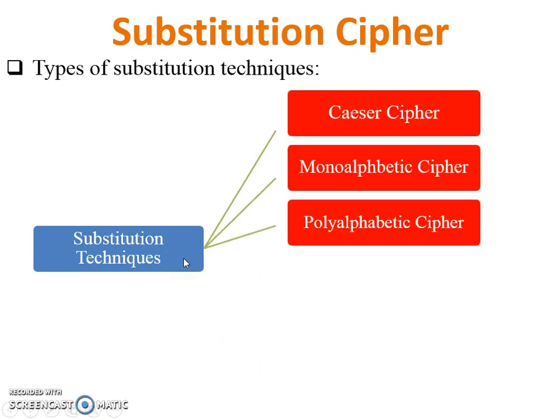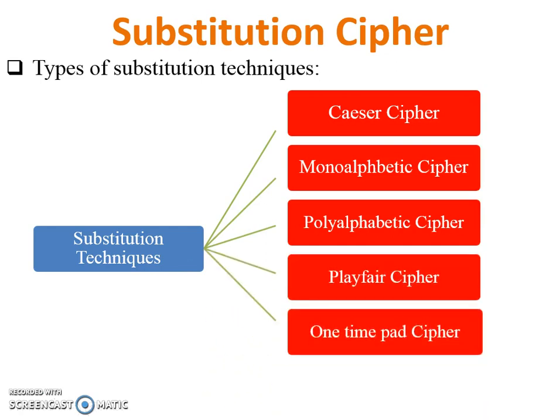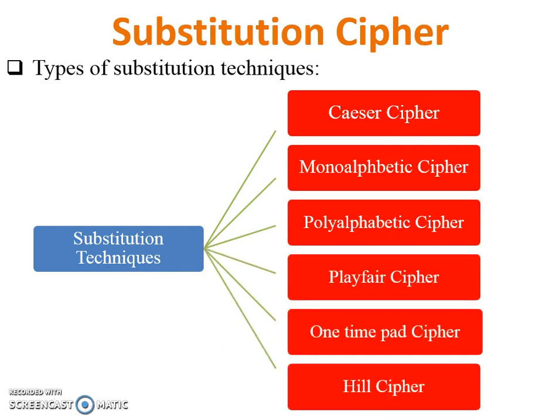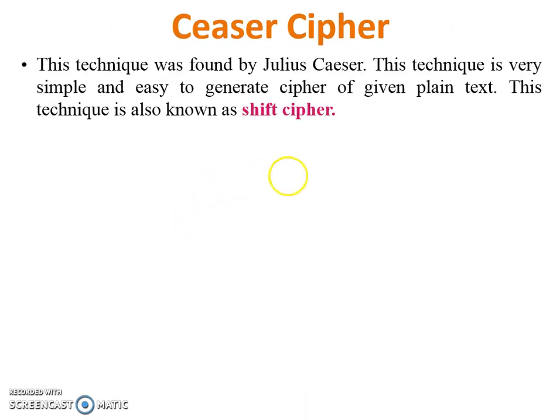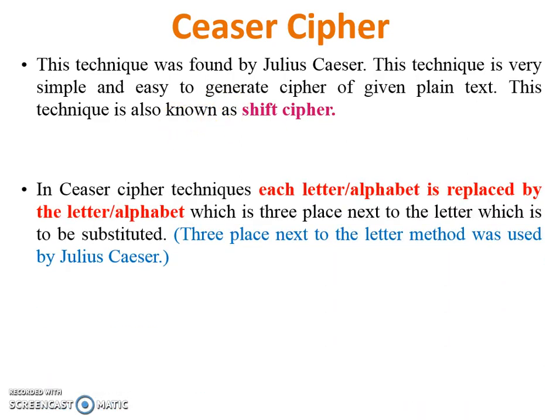Playfair cipher, one-time pad cipher, and Hill cipher. Today I am going to teach you Caesar cipher. This technique was found by Julius Caesar. This technique is very simple and easy to generate ciphertext of given plaintext. This technique is also known as shift cipher. In Caesar cipher technique, each letter or alphabet is replaced by another letter or alphabet, because Caesar cipher is a substitution cipher.